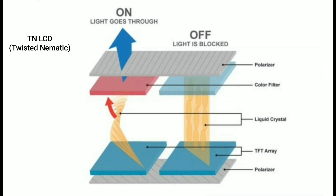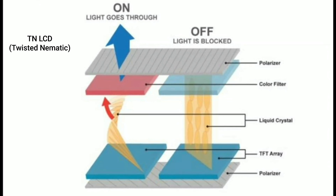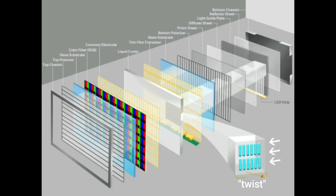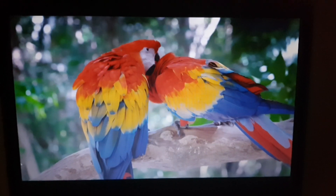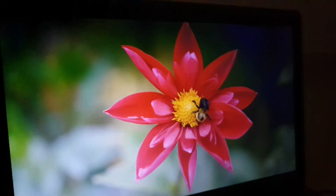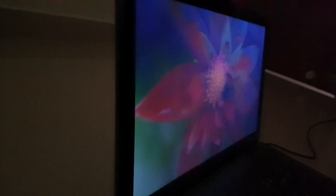Just like other LCDs, TN LCDs also have a backlight and light travels through a lot of layers. When current is applied to the liquid crystals, the crystals bend about 90 degrees and bend the light so it can pass through. TN LCD is the most affordable type of LCD display, but its greatest disadvantage is terrible viewing angles — colors start to shift even if you move away from dead center.